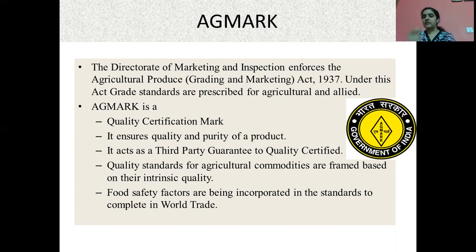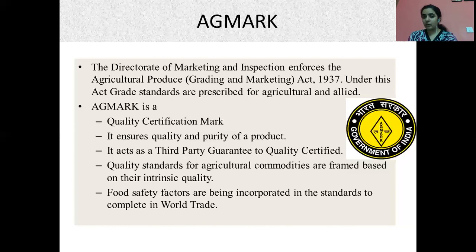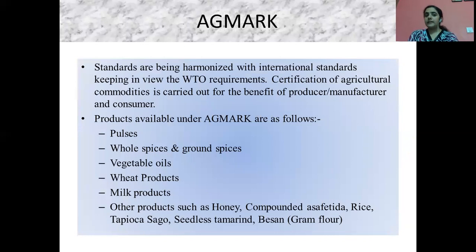The key points about Agmark: it is a quality certification mark, it ensures the quality and purity of the product, and it acts as a third party guarantee to control certified quality standards for agricultural commodities framed based upon their intrinsic quality. Food safety factors are being incorporated into standards to compete in world trade, and these standards are harmonized with international standards keeping in view the WTO, that is World Trade Organization, requirements.